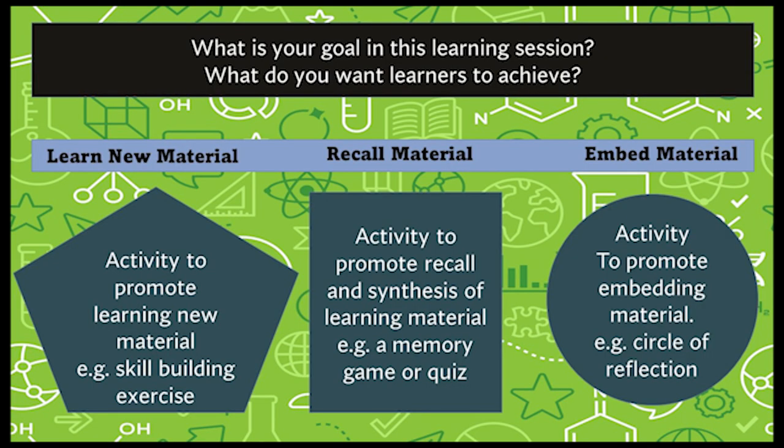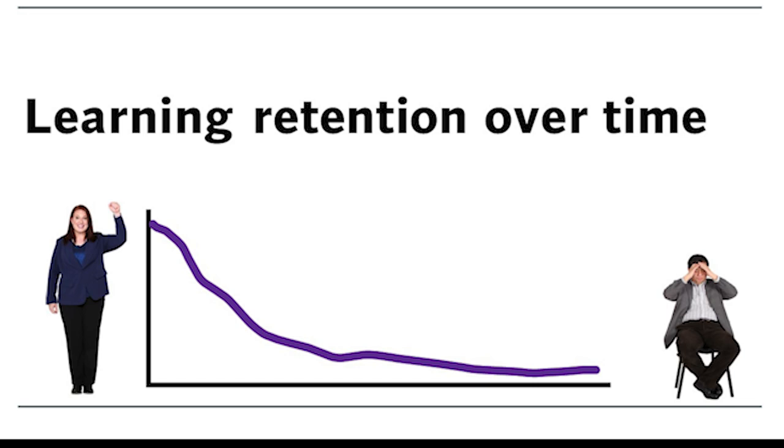If you are getting your students to learn new material, there are some things that you can get them to do which are a little bit different from things you would get students to do if you wanted them to recall or embed or get to the next level in their learning. So let's start with new material. When you're giving your learners new material, you want to optimise their capacity to retain the information. We know that we need people to learn as much as they can within a sort of 10-minute sweet spot before they start waning. Every 10 minutes, shake it up — get your learners to be doing something different.